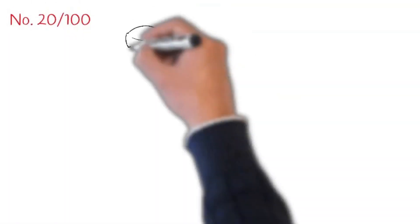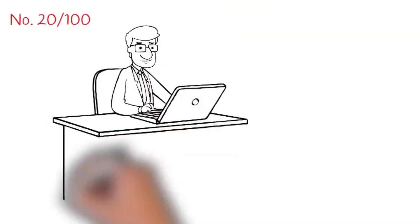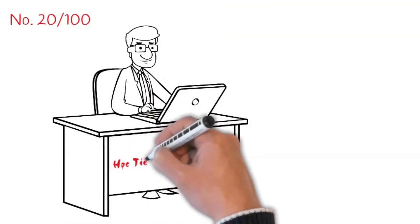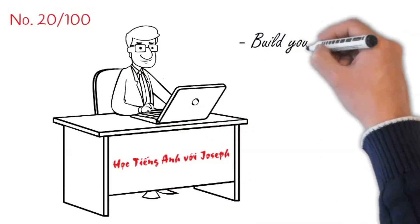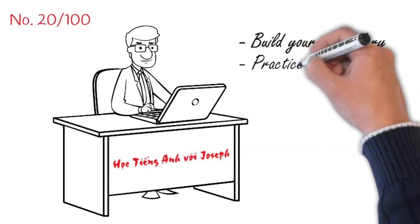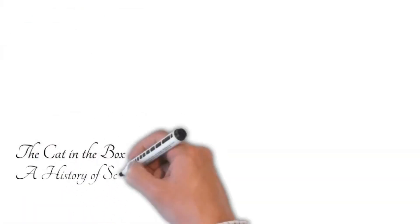Welcome to Hào Tinh Anh Với Joseph, episode number 20 out of 100 of The Cat in the Box. A History of Science in 100 Experiments.